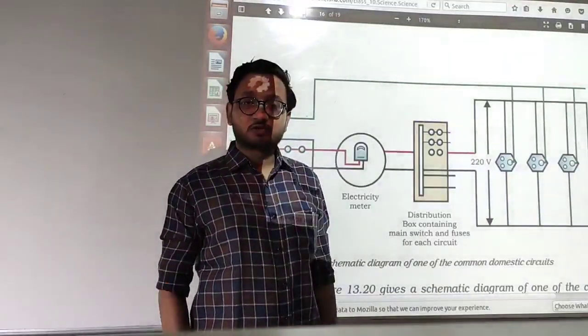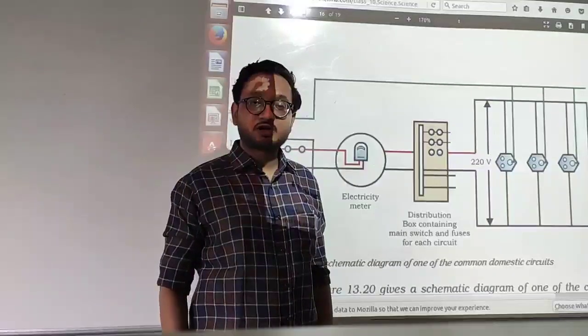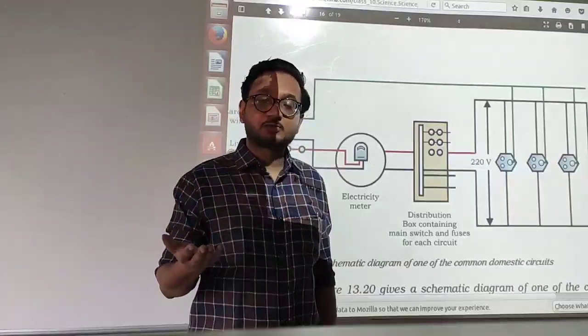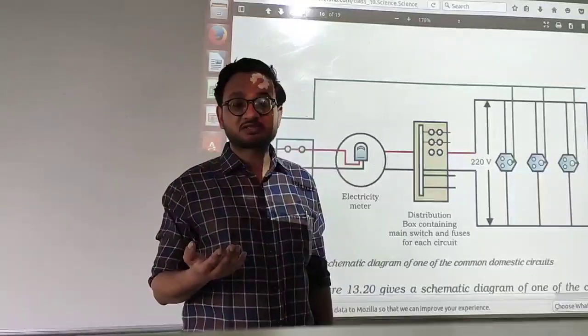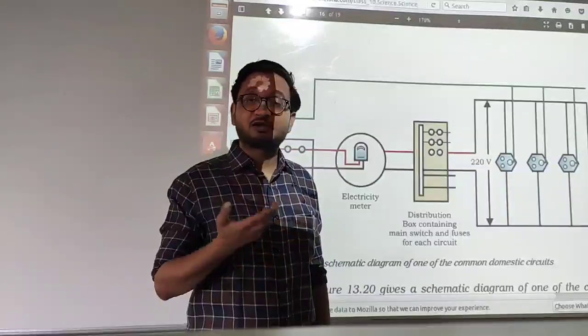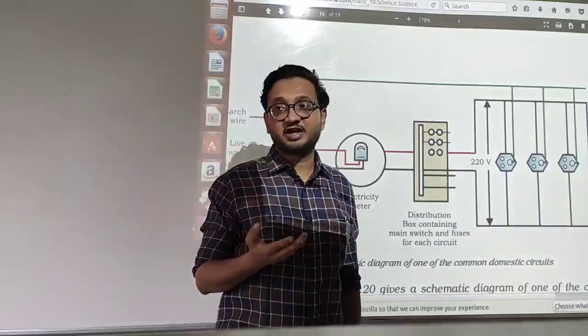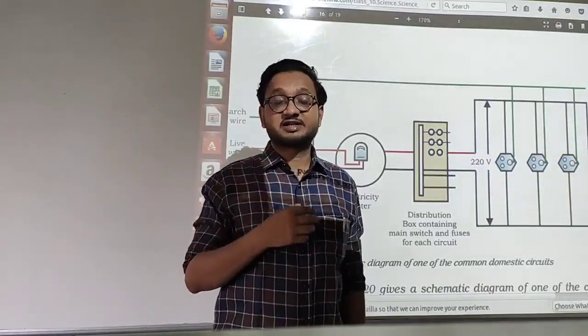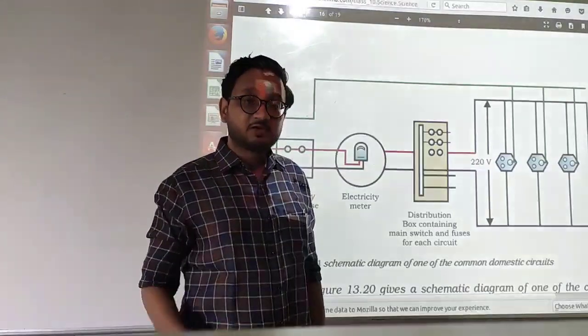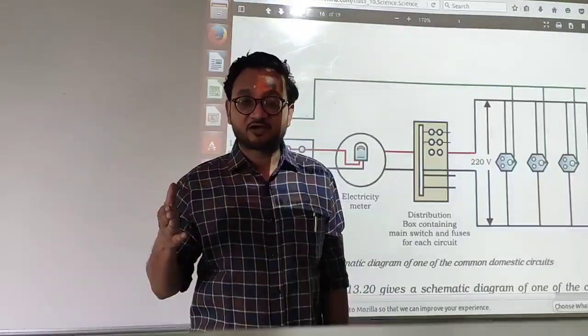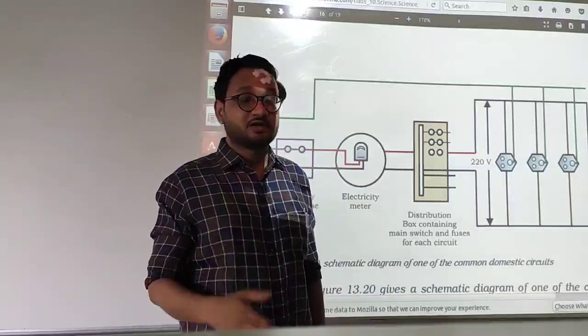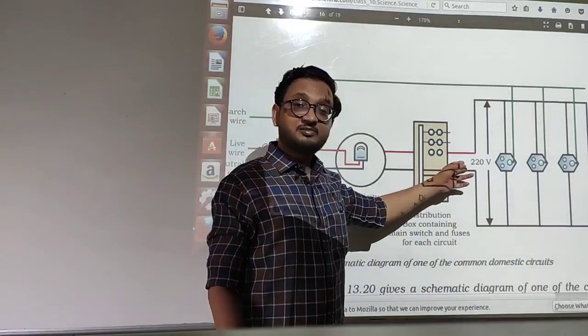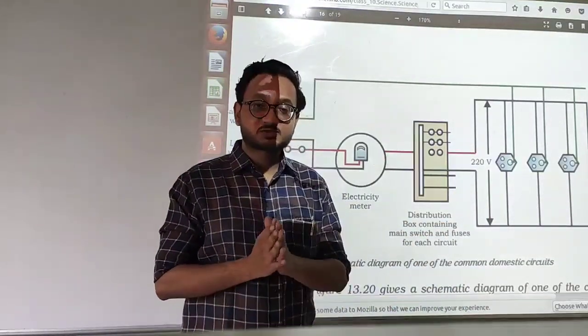I hope this is clear to you students. At our home for smaller appliances like fans, tube lights and bulbs and everything we have a normal connection that is 5 ampere connections and if a particular home is the one with a large family where we have many ACs or coolers or water heaters like geysers and everything electric geysers then we use a separate line for that. That is a 15 ampere line. So 15 ampere line is connected for heavy appliances and 5 ampere line is connected for smaller appliances.